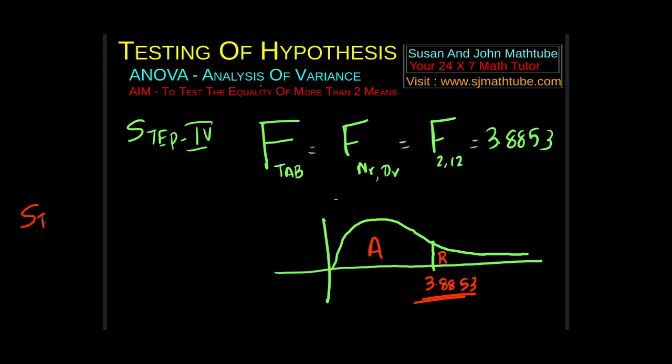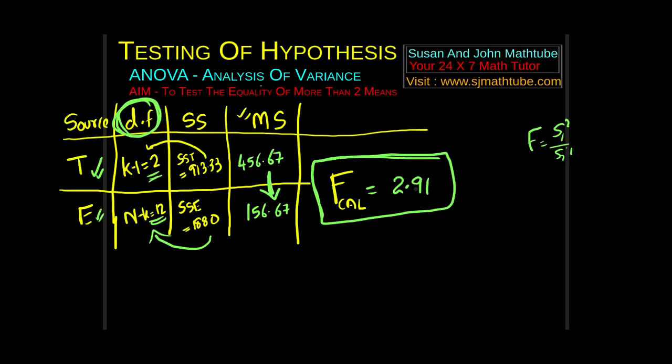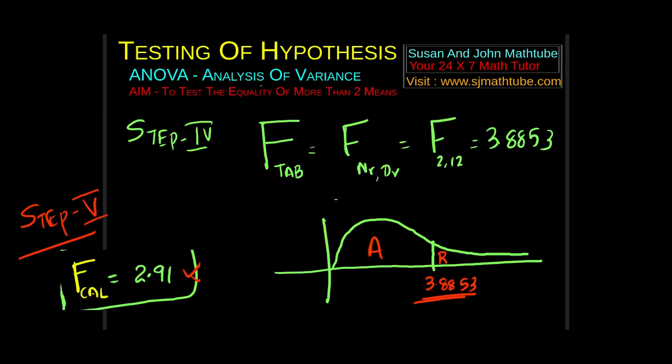And now, step number 5. From the last step, we got F calculated equal to 2.91 from the ANOVA table. Now, 2.91, what is the location of 2.91? Here. That means we accept H0. That's it.